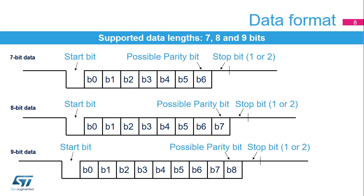The data length can be 9, 8, or 7 bits, with the parity bit counted. Finally, one or two stop bits, where the line is driven high, indicate the end of the frame.